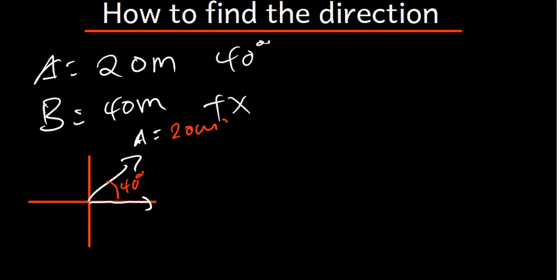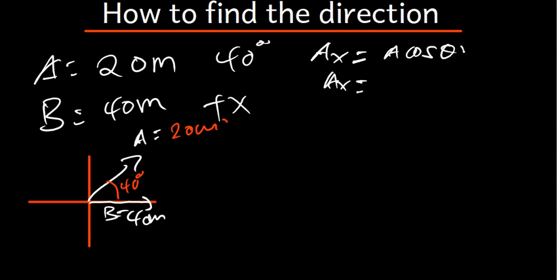The question is: how can we find the resultant? To find the magnitude, we first resolve each vector into x and y components. AX equals A cos theta, so AX equals 20 cos 40, which gives us 15.32 meters.